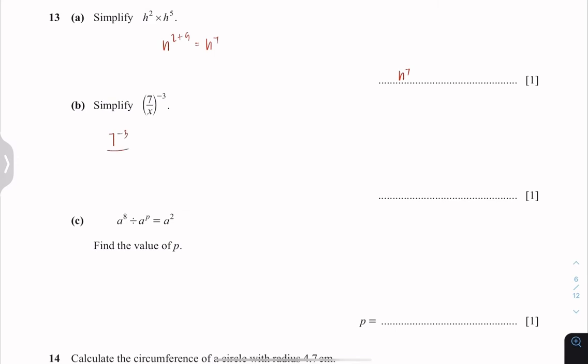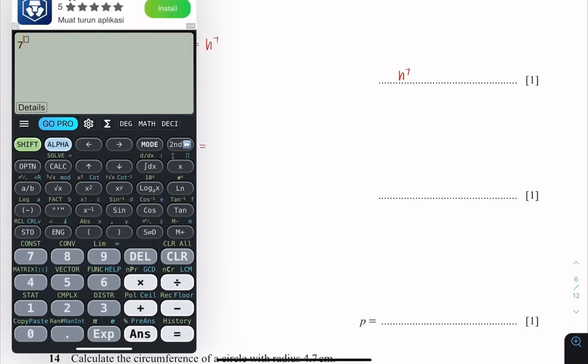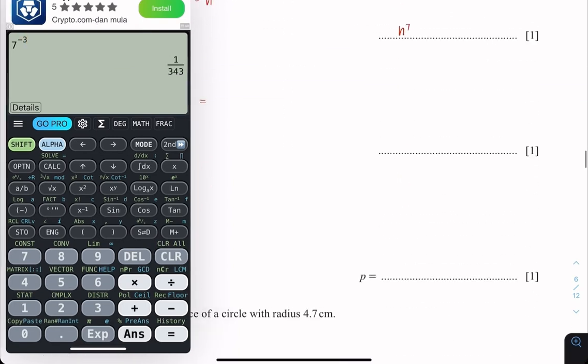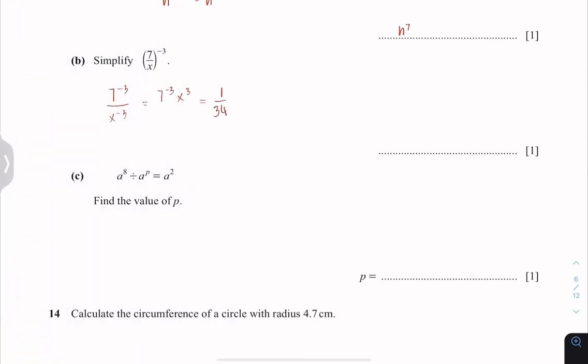Part B is 7 power negative 3 and x power negative 3. That gives us 7 power negative 3 and x power 3. 7 power negative 3 according to the calculator is 1 over 343 x cubed. And that is our final answer.